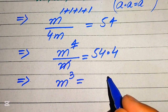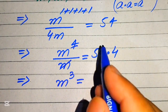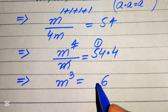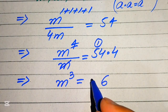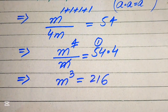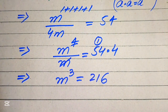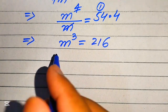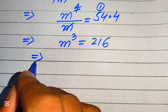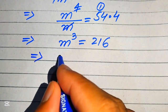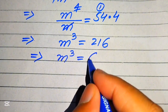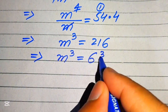On the right-hand side, 54 times 4: 4 times 4 is 16, carry 1; 4 times 5 is 20, plus 1 is 21. So it becomes 216. We know that 216 equals 6 cubed, so it is written as m cubed equals 6 cubed.